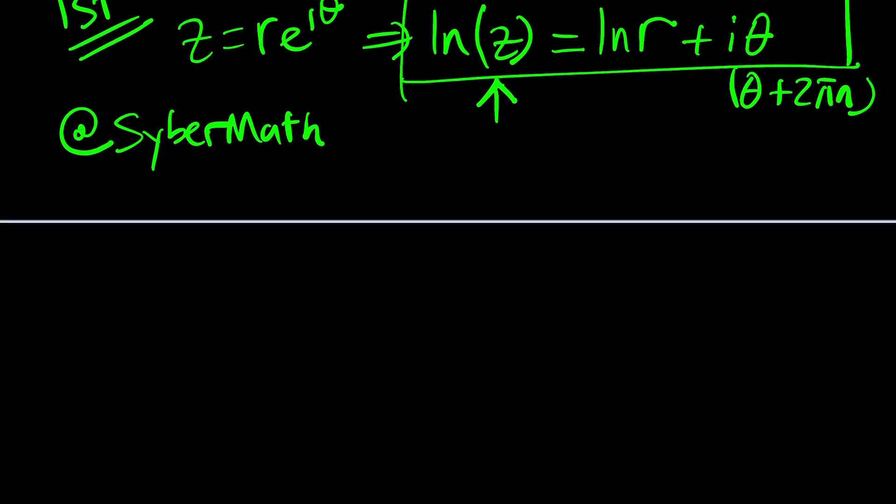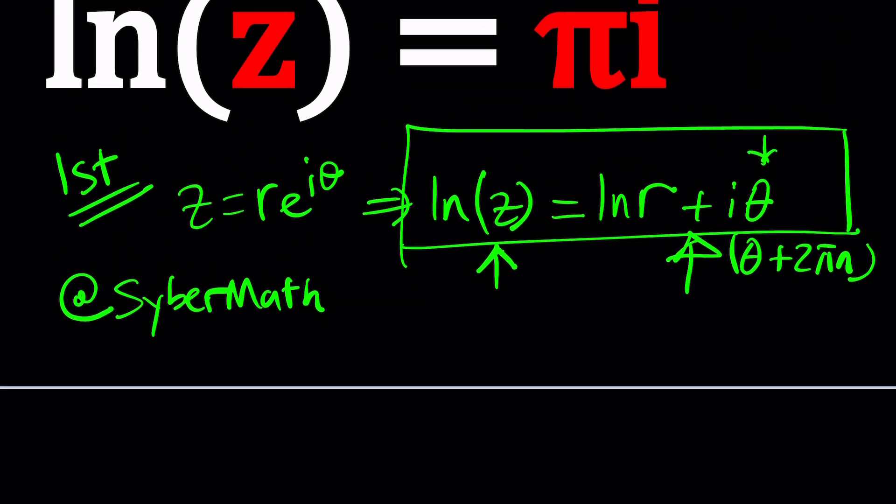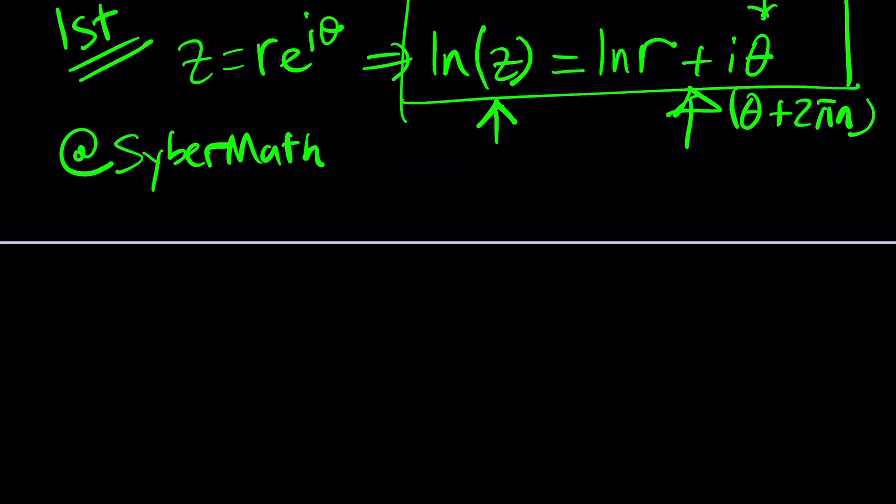So let's go ahead and take this right-hand side, set it equal to pi i, because that's what ln z is. ln r plus i theta equals i pi. So basically, one thing to remember though, r is a real number. It's greater than zero, right? Because if r is zero, then ln r is not defined. So we want r to be positive in this case. And ln r is a real-valued logarithm. So it's not multi-valued. It has a single particular value.